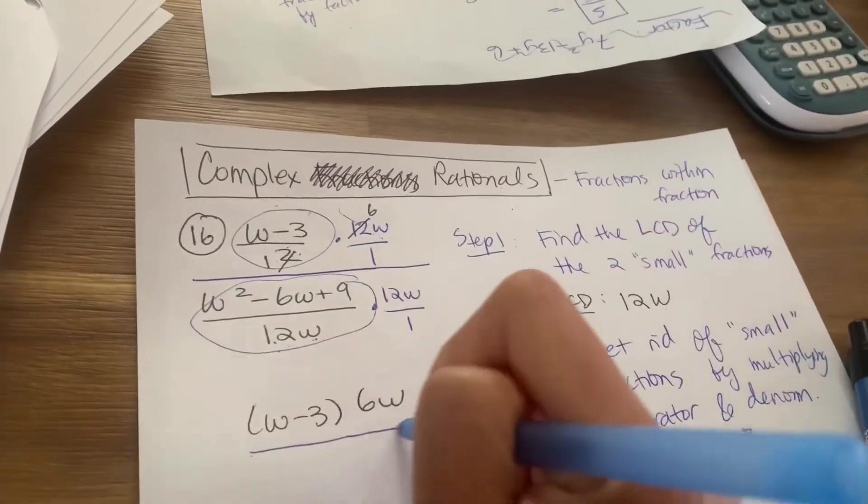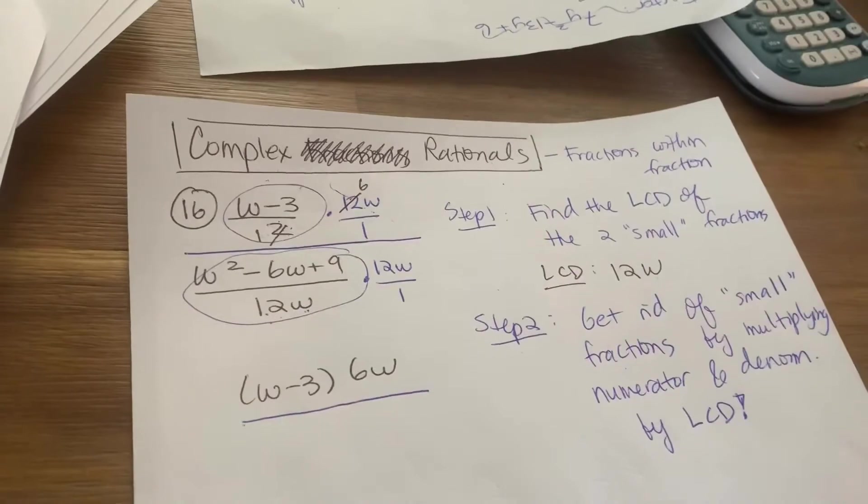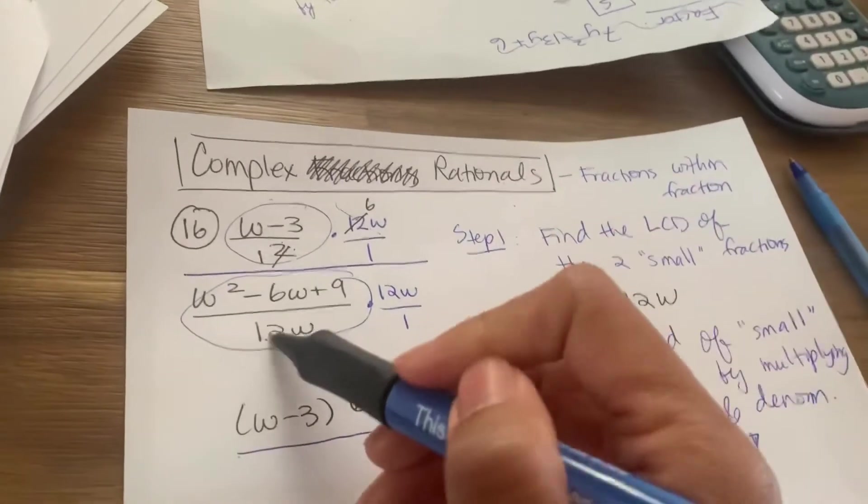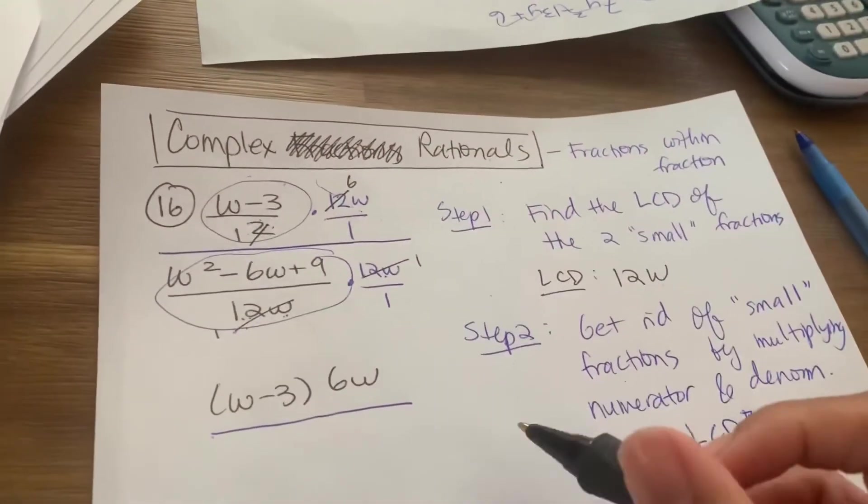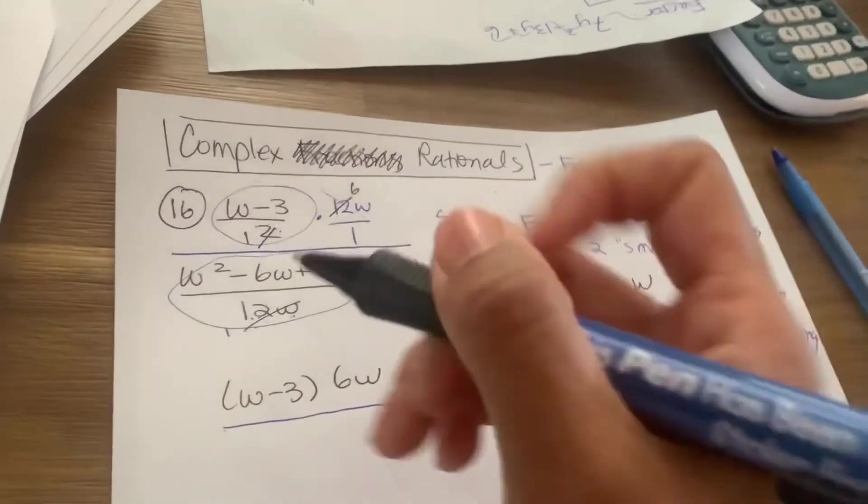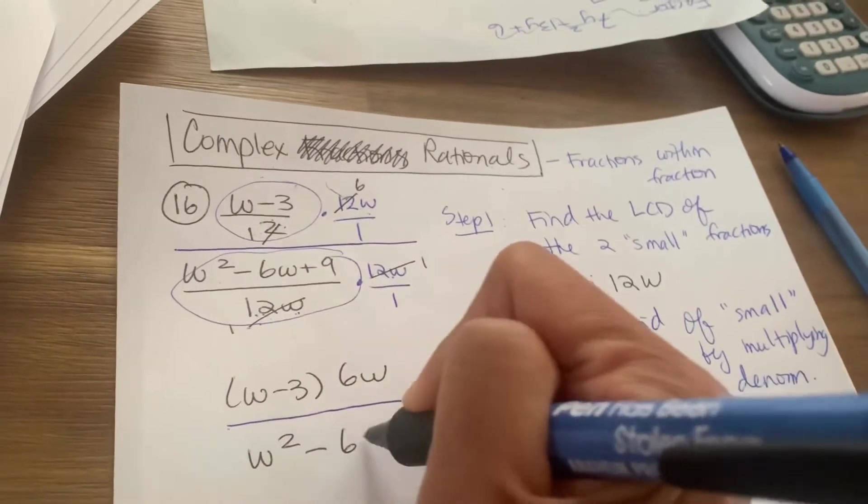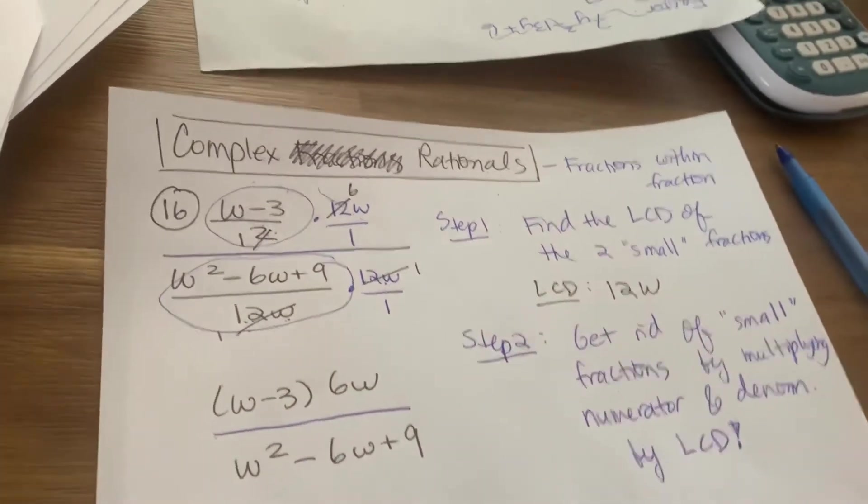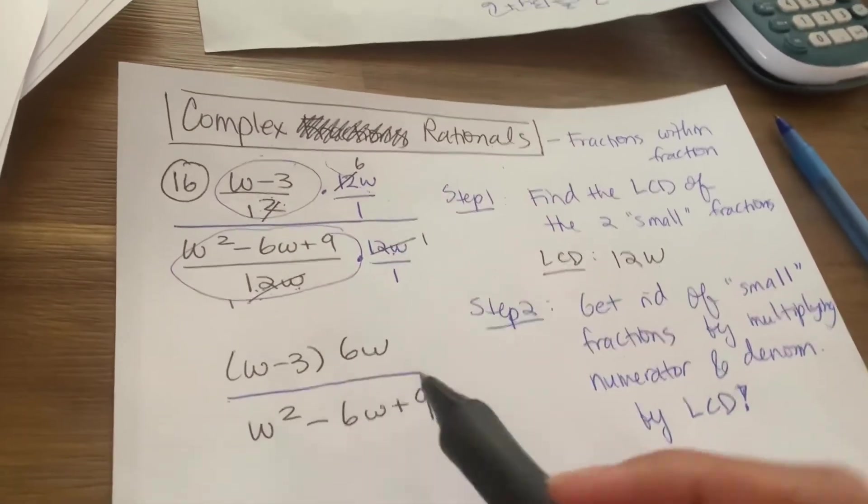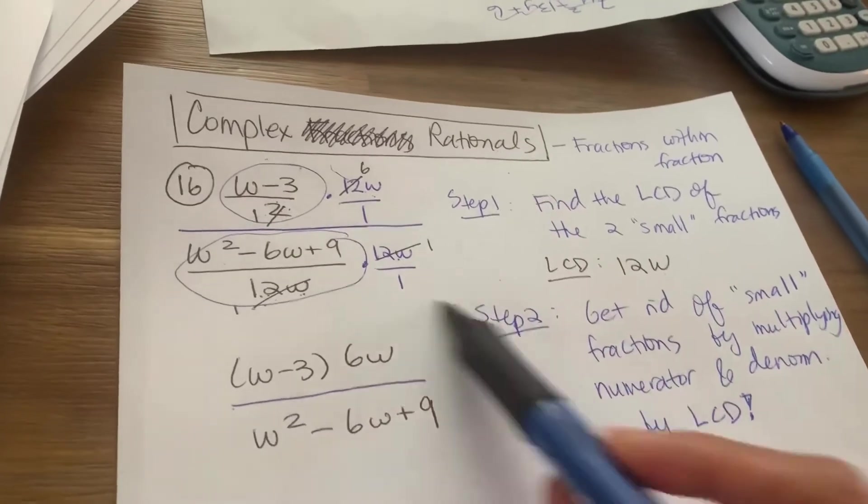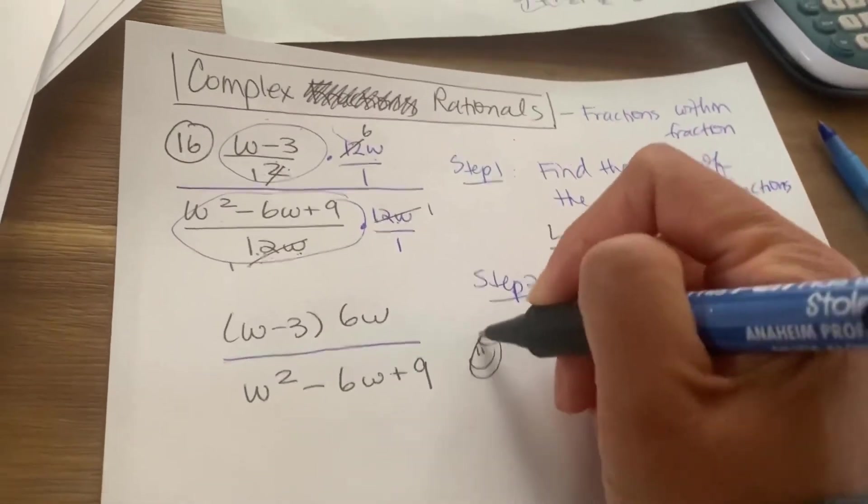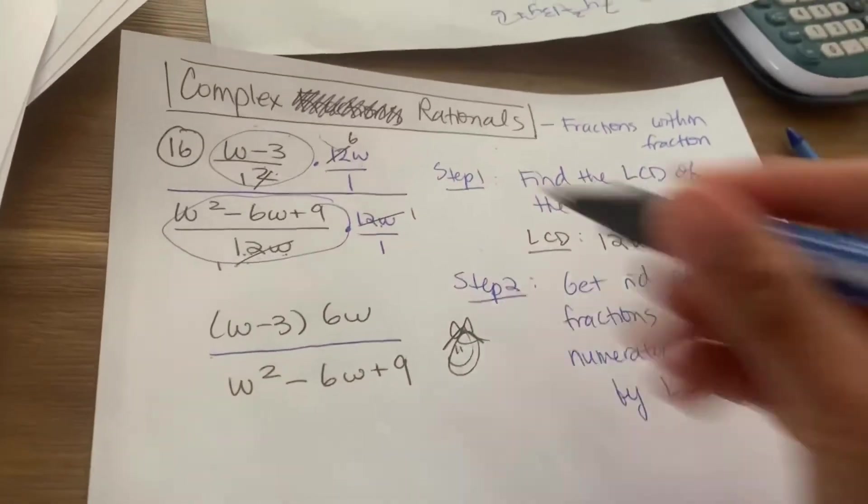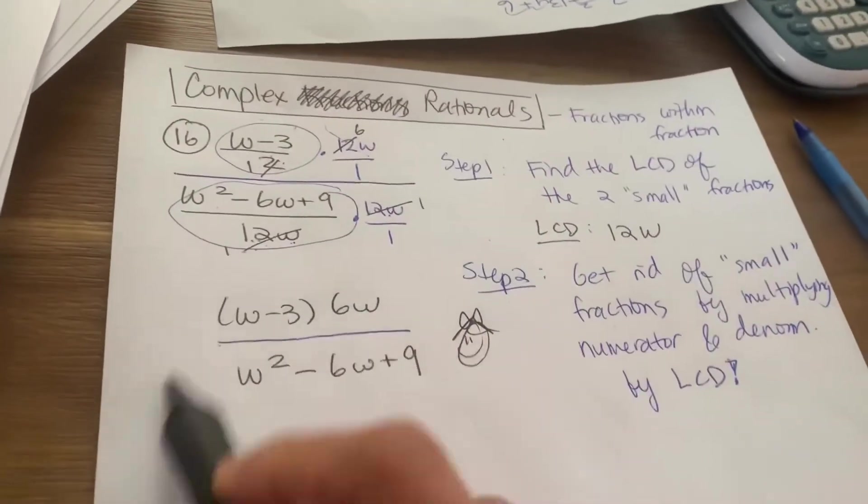Now the bottom, what cancels out? Well, look at this. The 12W and 12W cancels out, just become a 1. It becomes a 1, and what's left on the denominator? I have a W squared minus 6W plus 9. No more little fractions. Now we're only left with a big fraction, and that's what we want, right? So that makes me happy because now it's no longer complex looking. It's simple. It's just a simple fraction now.